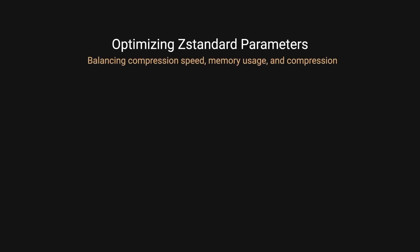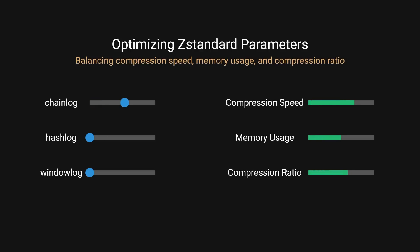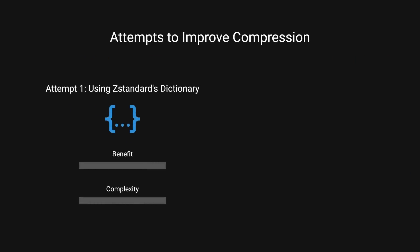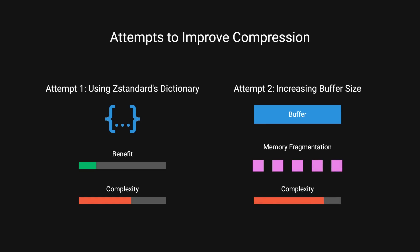The team also explored configuring ZStandard's parameters to achieve better compression ratios, focusing on three key parameters: chain lock, hash lock, and window lock. These parameters offer a tradeoff between compression speed, memory usage, and compression ratio. After experimenting, they settled on slightly higher-than-default settings that provided improved compression while fitting comfortably within their gateway's node memory constraints. They also attempted to improve compression further using ZStandard's dictionary, but the complexity outweighed the modest improvement. They also tried increasing the buffer size during off-peak hours, but that led to memory fragmentation issues and added complexity with limited benefits.